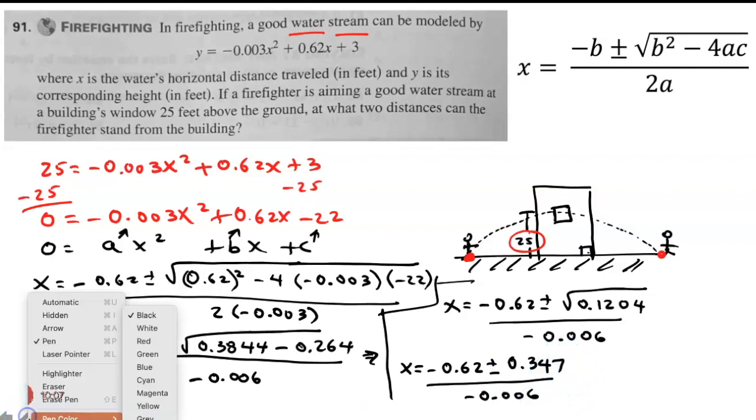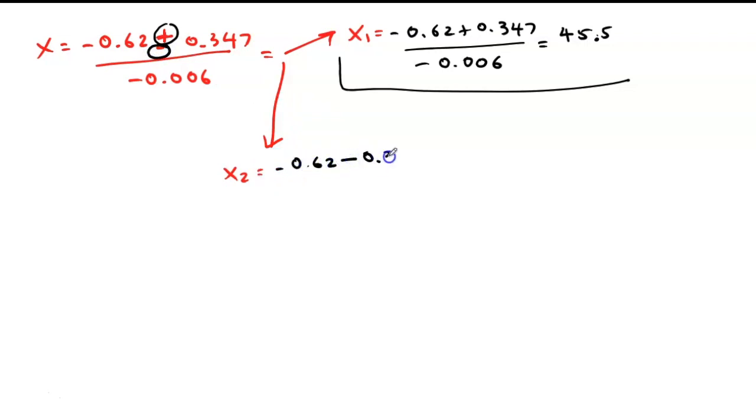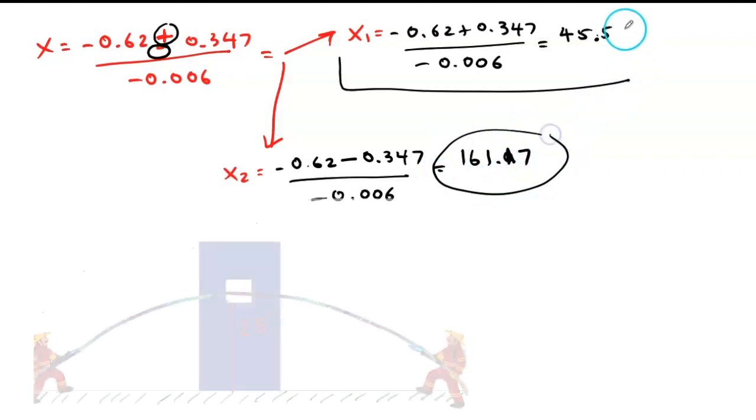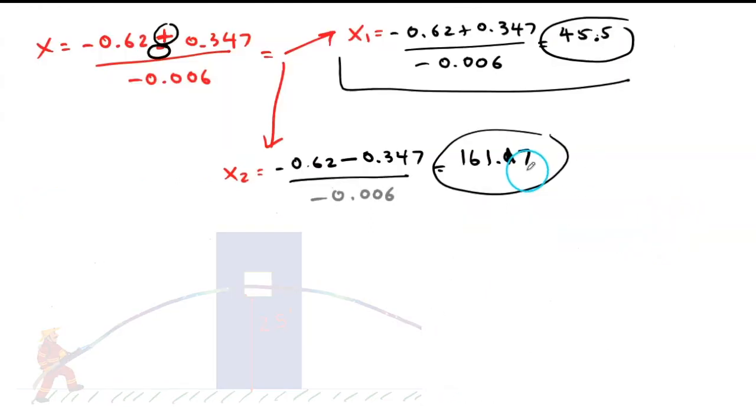Now, from here, I have two answers. One with plus, one with minus. I'm going to use 0.62 plus 0.347 divided by negative 0.006. Be careful with the signs. This is going to give me 145.5, and that's my answer number one. The second one, I'll use the negative: 0.62 minus 0.347, and this will give me 161.17. Those are the two horizontal distances that my firefighter can stand: 145.5 and 161.17 feet.